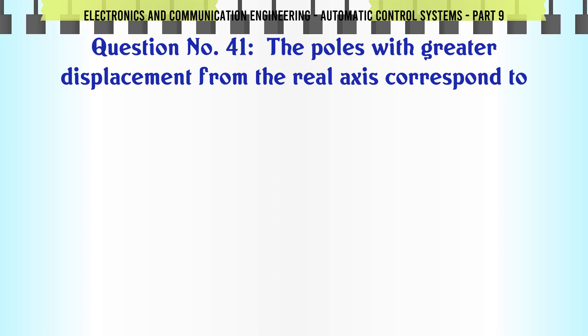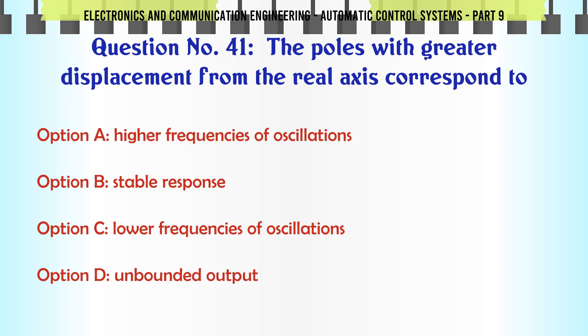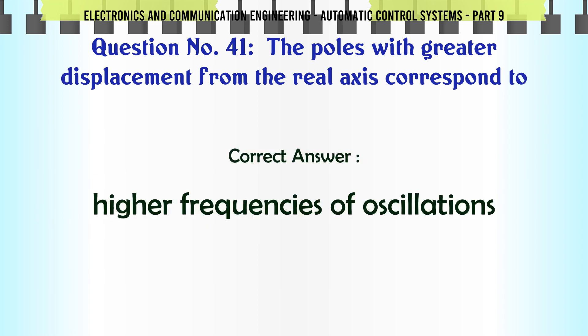The poles with greater displacement from the real axis correspond to: A. Higher frequencies of oscillations, B. Stable response, C. Lower frequencies of oscillations, D. Unbounded output. The correct answer is: Higher frequencies of oscillations.